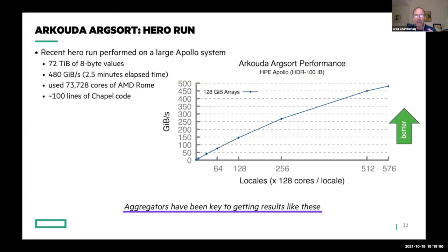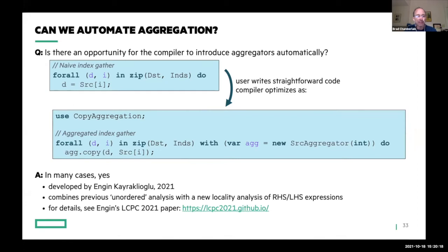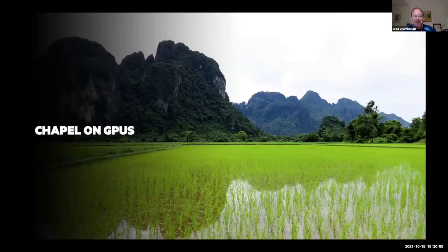These aggregators have been key to getting performance results like the arkouda hero sort. As a compiler person, one would ask: could the compiler be doing this automatically? We found that yes, in many cases the compiler can automatically transform the simple index gather into the more optimized version. A paper on this was published at LCPC last week. On the graph you can see that the automatically aggregated version performs neck and neck with the manually aggregated case — a great result.